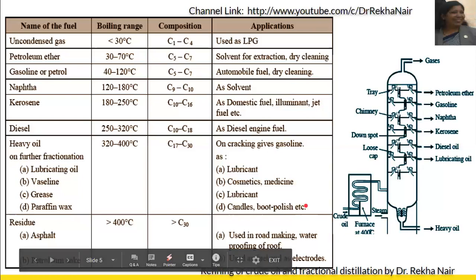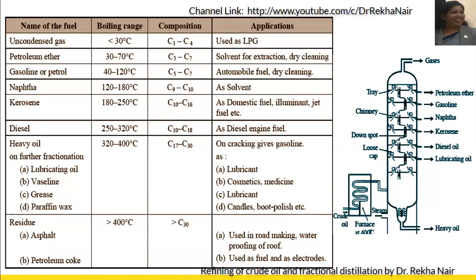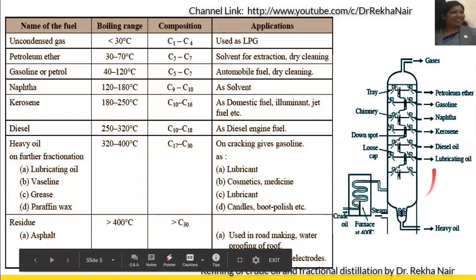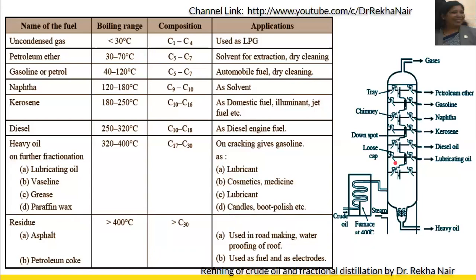The asphalt and coke left as residue above 400°C contain more than 30 carbon atoms. Asphalt is used for road making and waterproofing of roofs. Petroleum coke is used as fuel and as electrodes. All these fractions obtained from fractional distillation of petroleum have different applications.